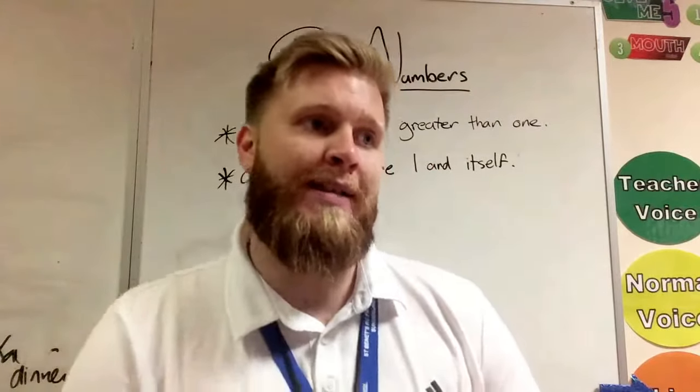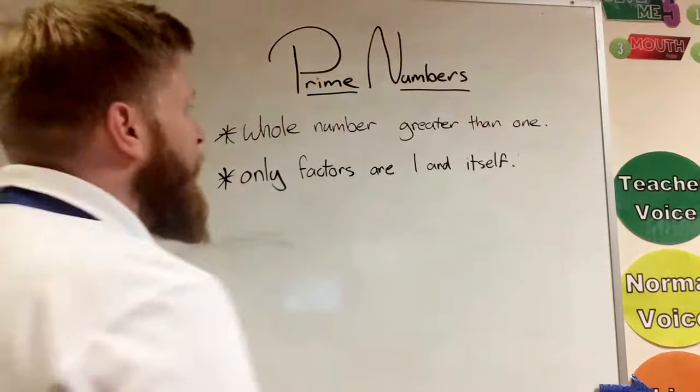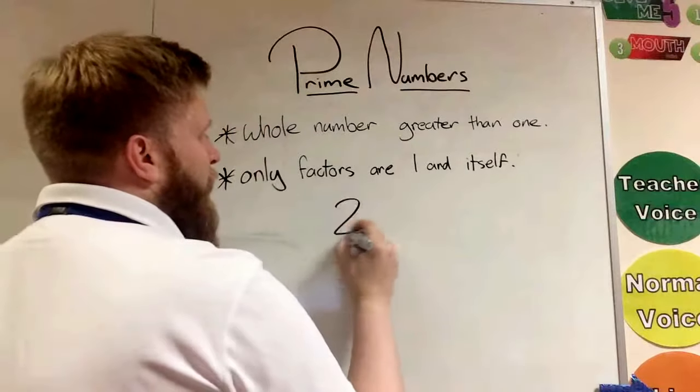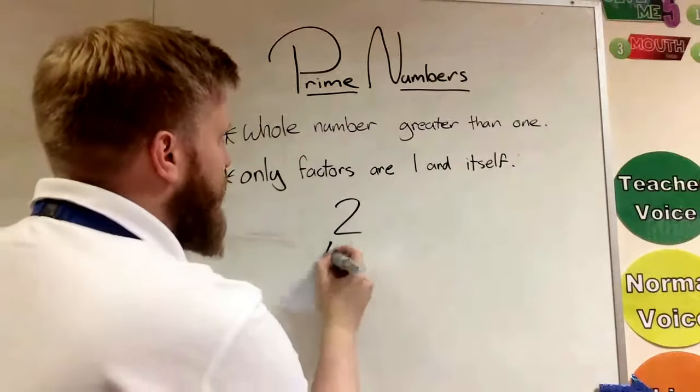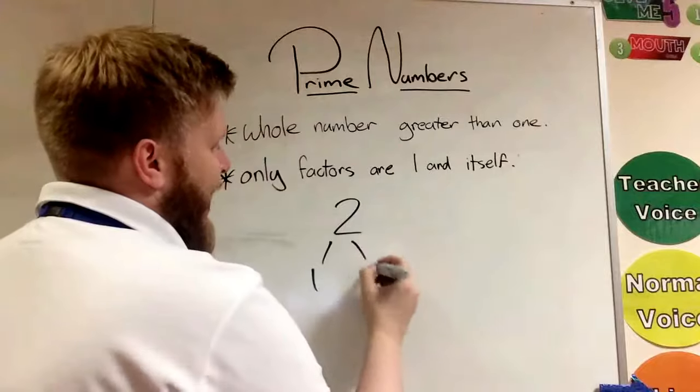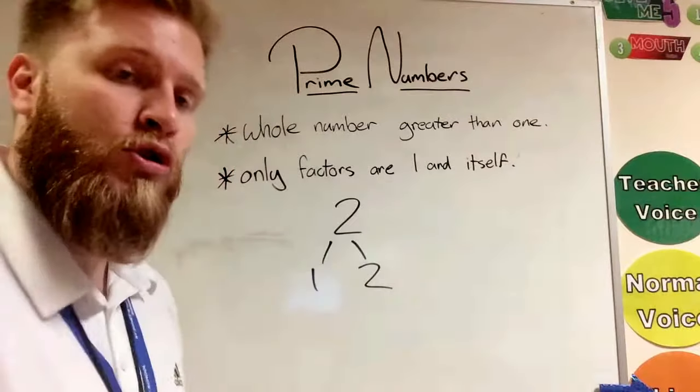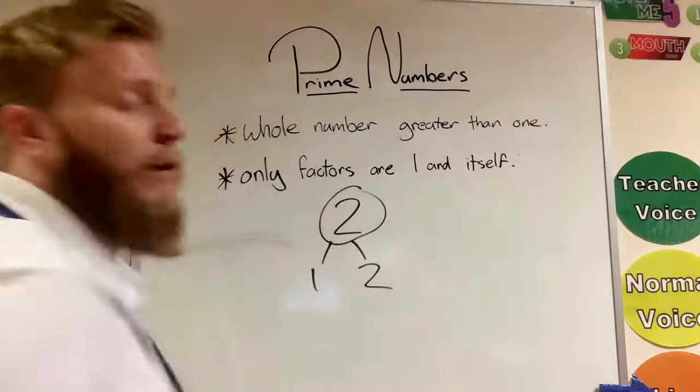So we'll show you some examples here. So we'll have a look at number 2. Now number 2's only factors are 1 and itself. So that would mean 2 is a prime number.